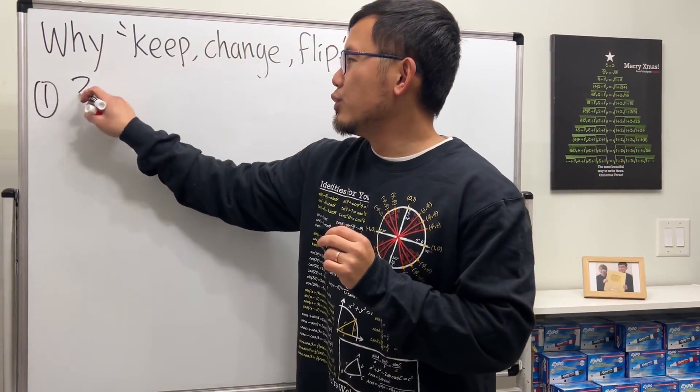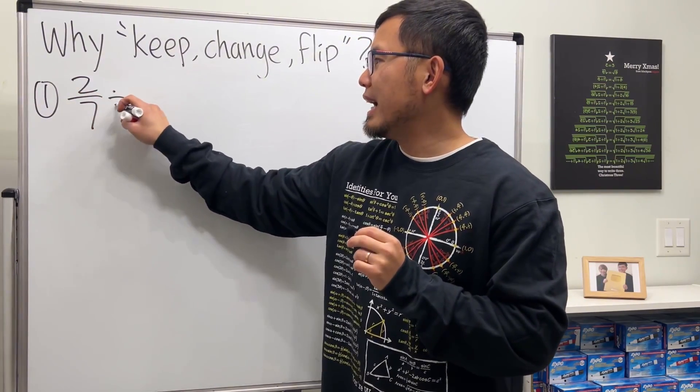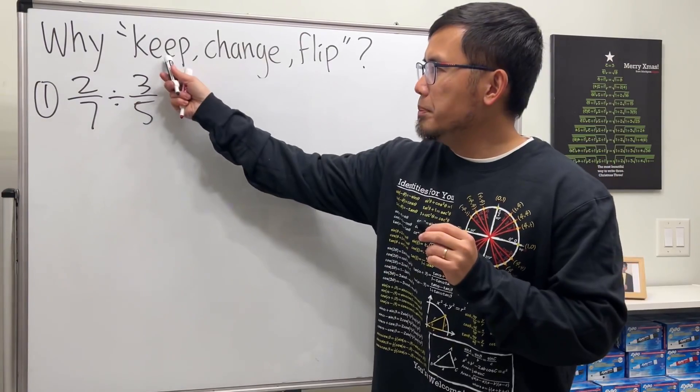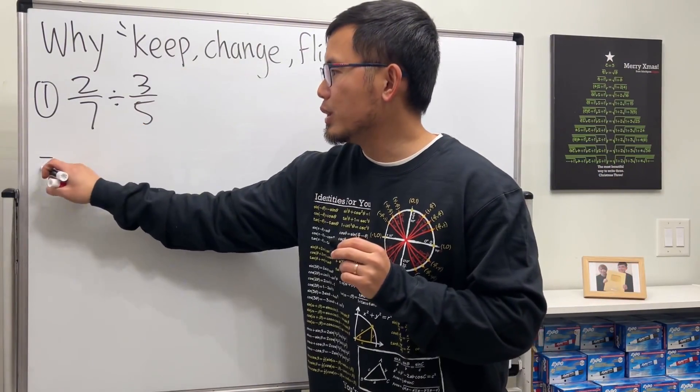Let's take a look at 2 over 7 divided by 3 over 5. And here we go. Keep means we keep the first fraction, so we have 2 over 7.